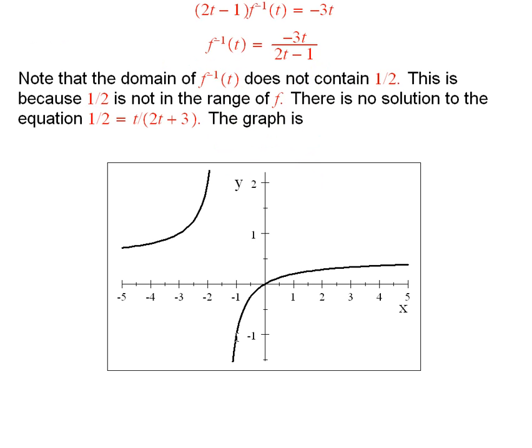Here is its graph. If you were to graph the original function, which was t over 2t plus 3 equal to f of t, it looks like this.